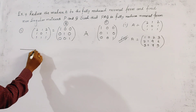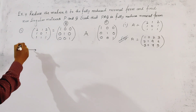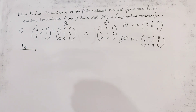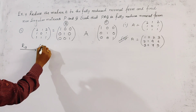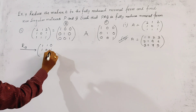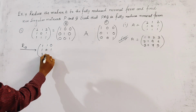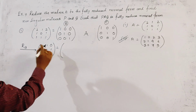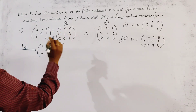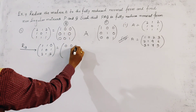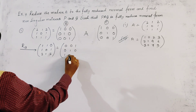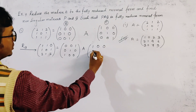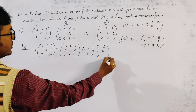Now we start the operations. We first perform a row operation: interchange R1 and R3, denoted R13. After this interchange, the matrix A becomes: row one [1, 1, 1], row two [1, 0, 1], row three [2, 1, 2]. Since this is a row operation, we apply it only to the left-hand side identity matrix, giving [0,0,1; 0,1,0; 1,0,0].